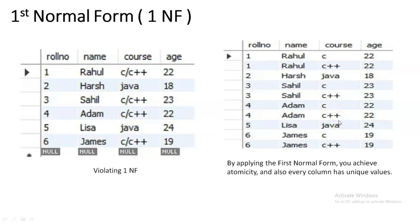The second rule is that all columns should have a unique name. You can see in this table four columns are there, so all four columns should have a unique name. The third rule is that if you take one particular column, all the data in that column should have the same data type. For example, the roll number data type should be integer, so all data in that column should also be of integer data type. These are the three rules to be considered for a table to be in first normal form. If all three rules are satisfied, then you can say the given table is in first normal form.